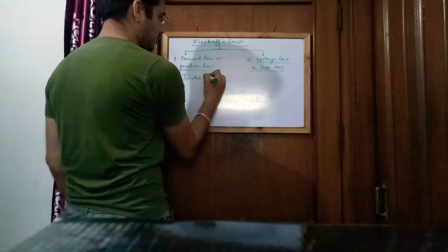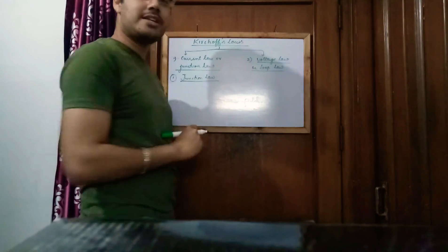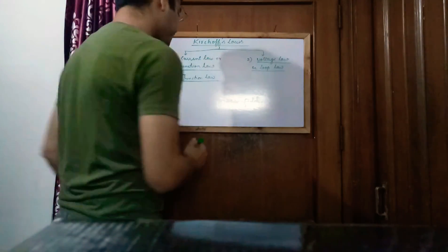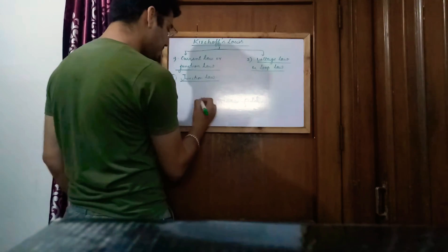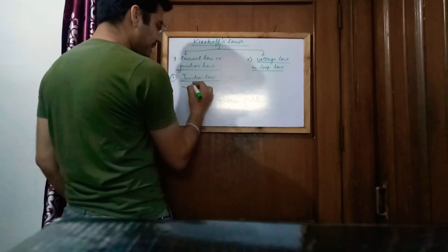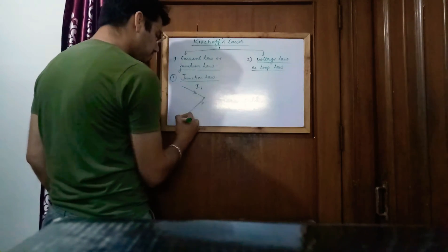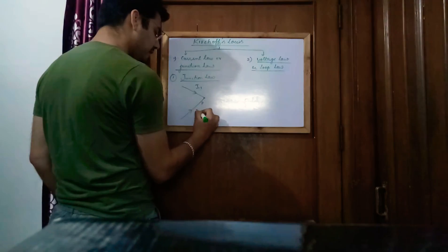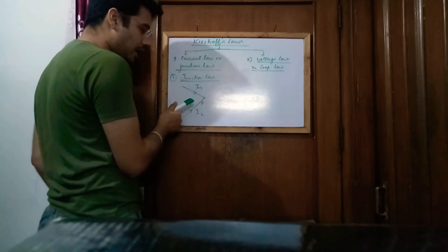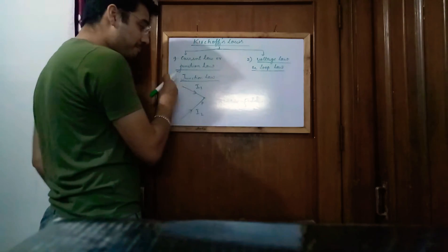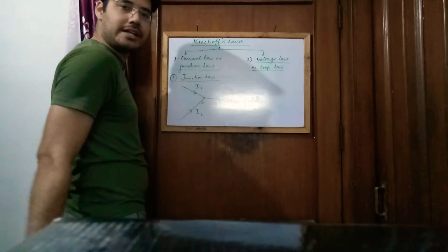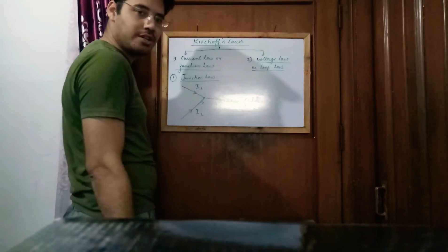So what is a junction? A junction is that point in a circuit where many wires meet. For example, at some point P which is the junction, one wire comes from one side carrying current I1, and another wire carries current I2. I1 and I2 are both coming toward and meeting at the junction.